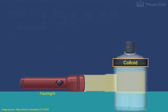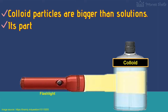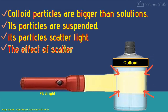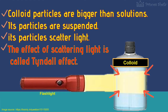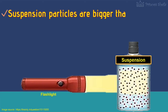In colloid, the particles are bigger than those in solutions. Its particles are suspended and scatter light. The effect of scattering light is called the Tyndall effect. In suspension, the particles are bigger than colloids and can be seen by the naked eye.